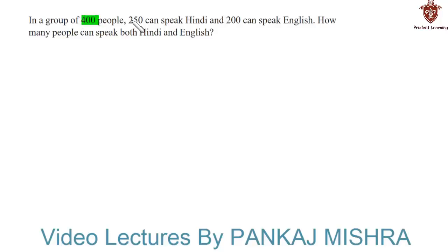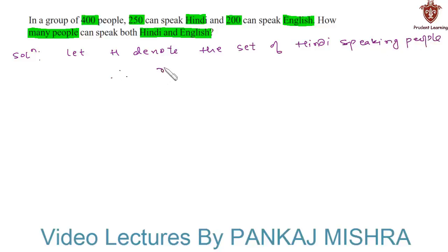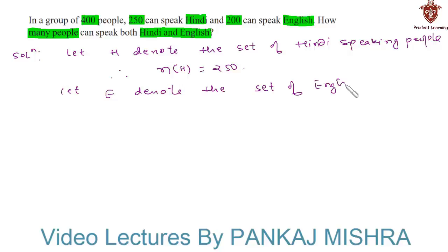In a group of 400 people, 250 can speak Hindi and 200 can speak English. How many people can speak both Hindi and English? Let us see the solution for this problem. Let H denote the set of Hindi speaking people. Therefore, the number of elements in H is equal to 250, since 250 people can speak Hindi. And let E denote the set of English speaking people.